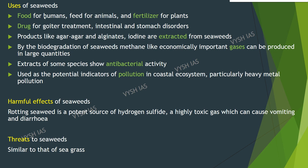Uses of seaweeds: They are important as food for humans, feed for animals and fertilizer for plants. They are used as a drug for goiter treatment and intestinal and stomach disorders. Products like agar-agar, alginates and iodine are extracted from seaweeds. By biodegradation of seaweeds, methane-like gases can be produced in large quantities. Extracts of some seaweed species show antibacterial activity. They are used as potential indicators of pollution, particularly heavy metal pollution in coastal ecosystems. Harmful effects: Rotting seaweed is a potent source of hydrogen sulfide, a highly toxic gas that can cause vomiting and diarrhea.